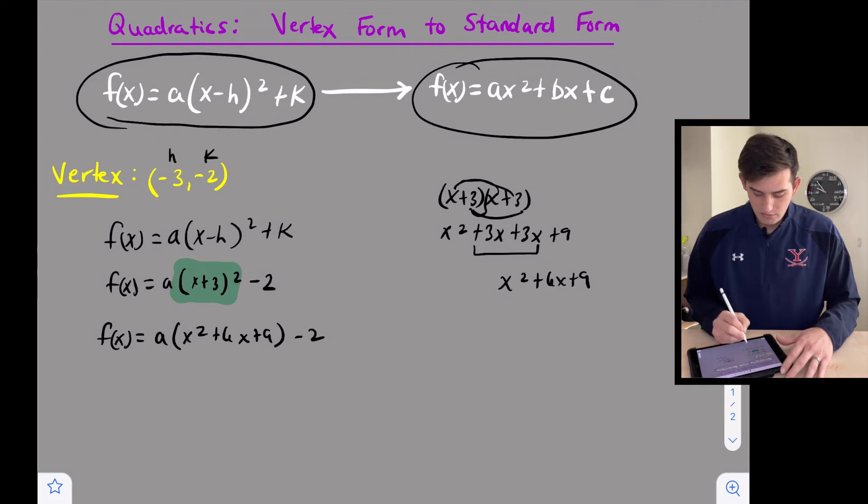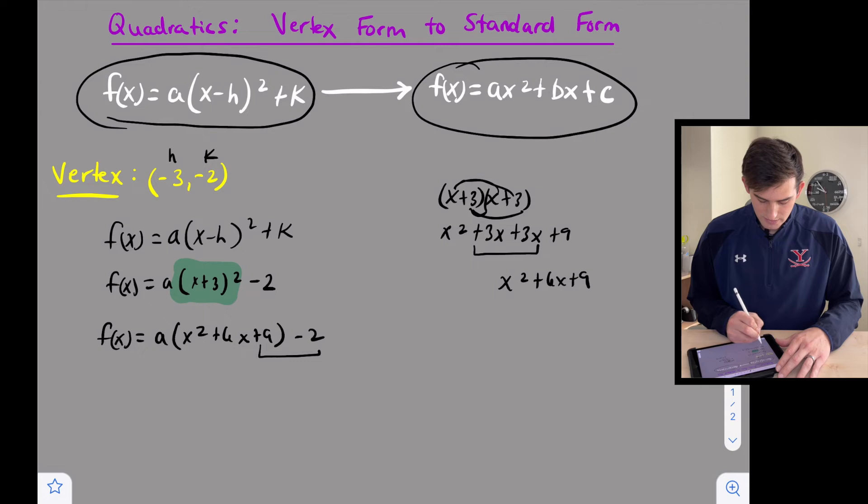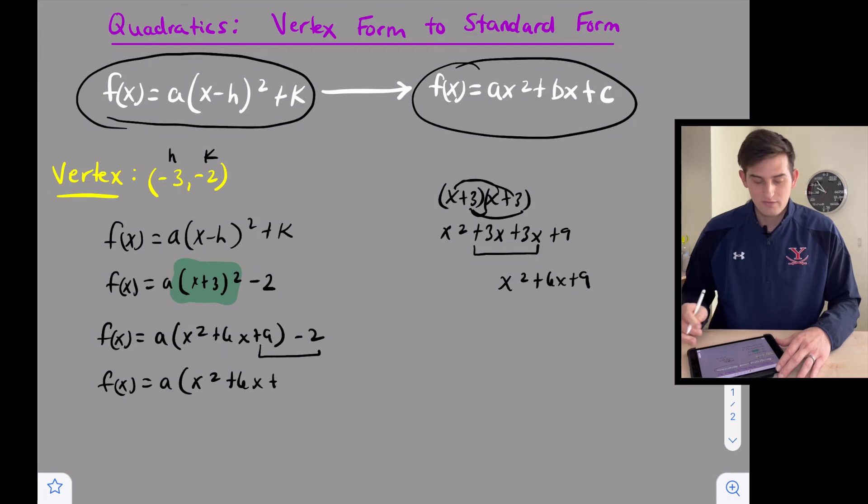Now we have 9 and -2 right here. These are like terms. We can go ahead and combine those. So let's say f(x) = a(x² + 6x + 7), right, 9 - 2.